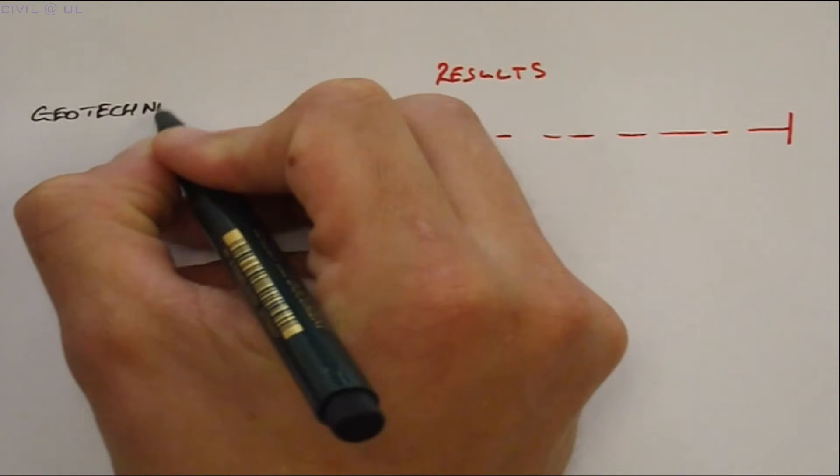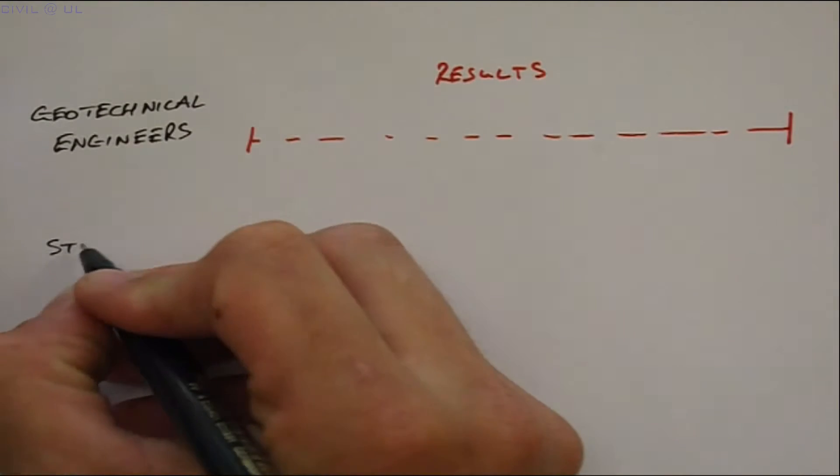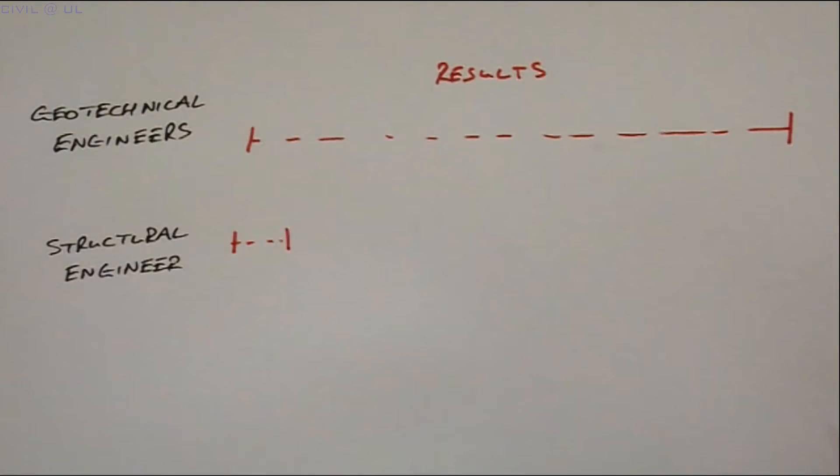Why is it that geotechnical engineers are comfortable working within such a wide range of results, while the structural engineer prefers much greater certainty?